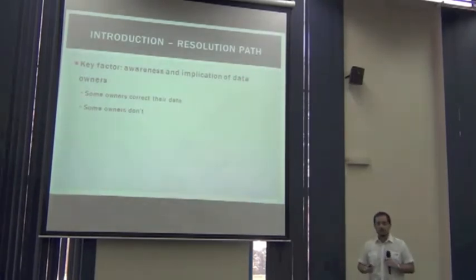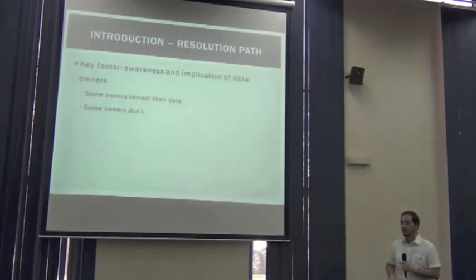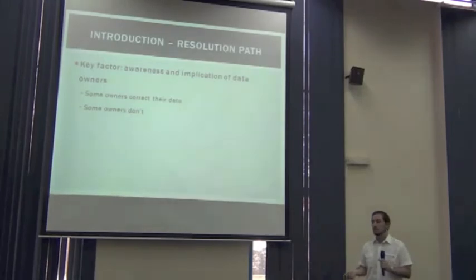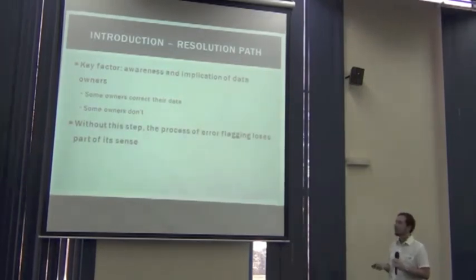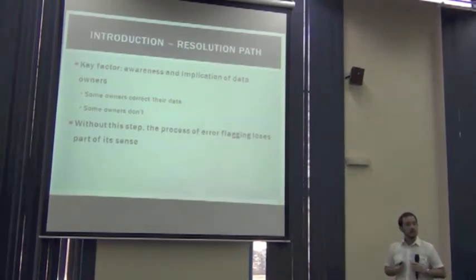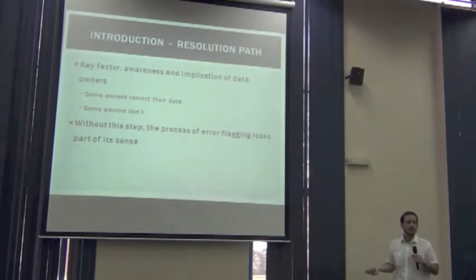Some owners are really engaged with data quality and take care of the data, but some do not. It happens that issues are reported to the original publishers but they just ignore them, because they don't understand what's wrong or they don't want to do anything with the data. In these cases, without the owners being aware of the problem, the process of error flagging loses its sense — because we cannot modify it, they don't want to modify it, and they are not able to modify it. So the error can last forever.